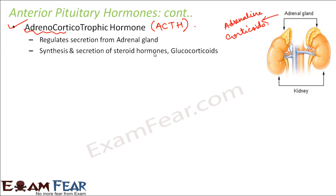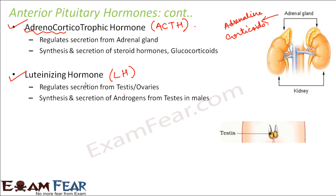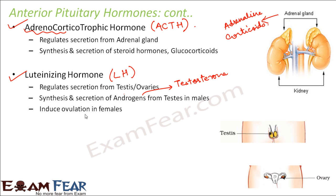Next is luteinizing hormone, written as LH. This regulates the secretion from the testes and ovaries. The testes secrete testosterone and the ovaries secrete estrogen. When to secrete the sex hormone is decided by luteinizing hormone. LH controls the synthesis and secretion of androgens (such as testosterone) from the testes in males. In females, it induces ovulation — the release of an egg from the ovary.